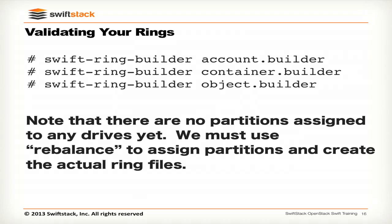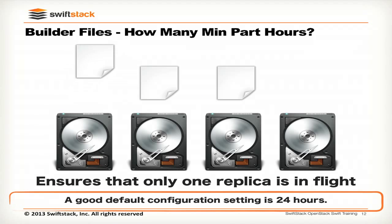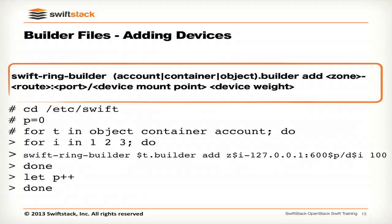The ring builder add command uses the disk label as the mount point — you can see the dollar-sign-I variable at the very end. That's the disk label we set up earlier. Because earlier we mounted as D1 for label one, it has a nice one-to-one mapping. Ultimately this is the mount point of that volume.